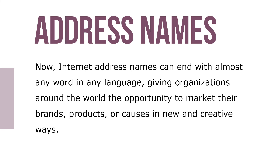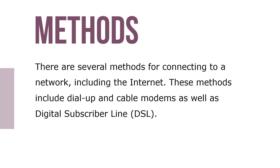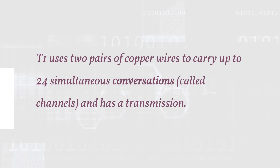There are several methods for connecting to a network, including the Internet. These methods include dial-up, cable modems, as well as digital subscriber lines. Organizations often use T1 or T3 lines. These are provided by their telephone company and are capable of transporting the equivalent of 24 conventional telephone lines using only two pairs of copper wires. T1 uses two pairs of copper wires to carry 24 simultaneous conversations, called channels, and has one transmission rate.